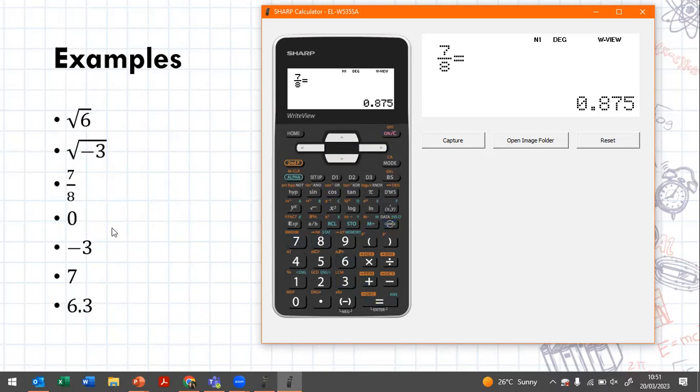Zero is a whole number. So it is a real rational whole number. Negative three is a real rational integer because it's negative. Seven is a real rational whole number or natural number. They're both or integer so it falls into any of those three categories. Six point three is a real rational number but it is not a whole natural or integer because it has a decimal.